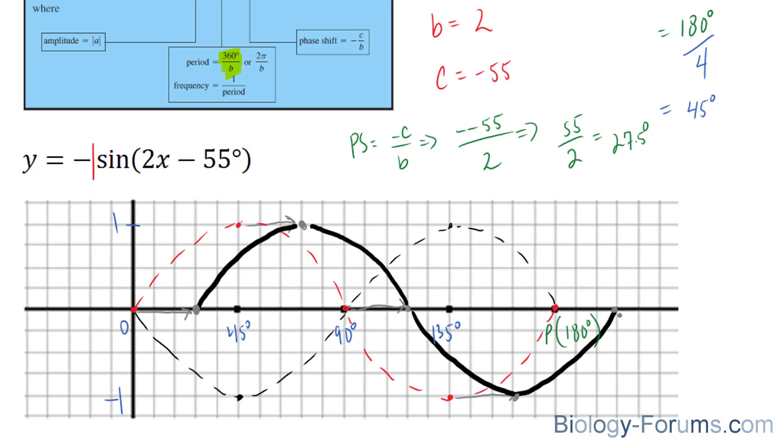represents y is equal to negative 1 sine 2x minus 55 degrees. There you have it. That is how you graph a sine function that has a negative amplitude and a phase shift.